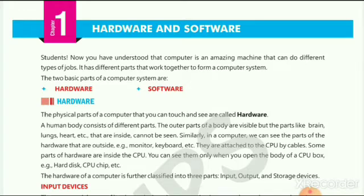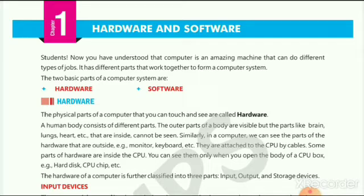Let's start with hardware. What is hardware? Hardware means the parts or devices of a computer that we can touch and see. For example, in the human body there are two types of parts. One of them is outer parts like hands, legs, nose, ears, etc. They are outside of our body, that's why they are visible. Similarly, in a computer system, the parts we can see are called hardware. In other words, in a computer system, the parts that are visible to us are called hardware devices.